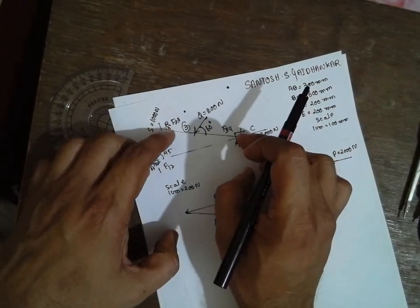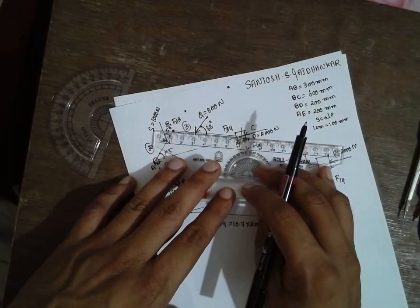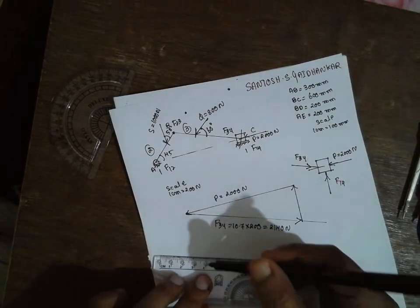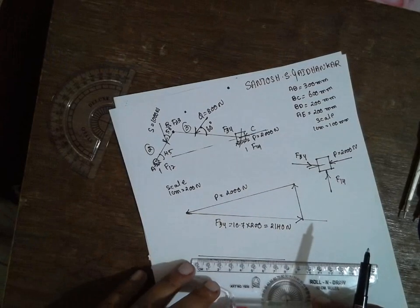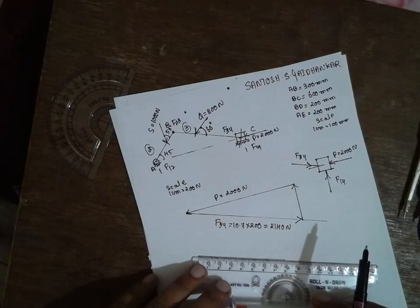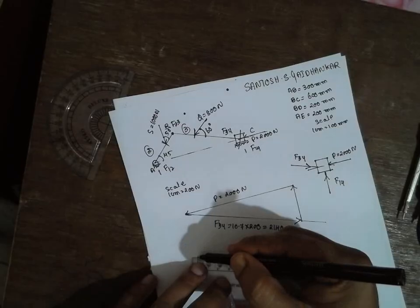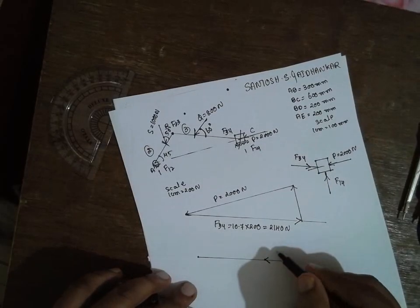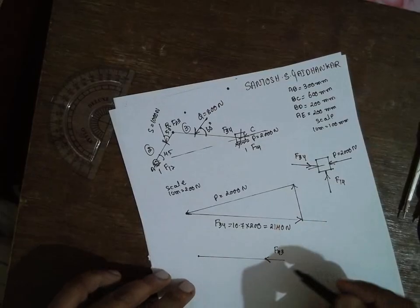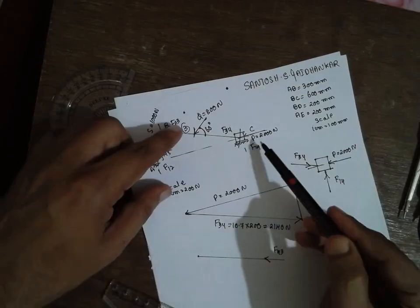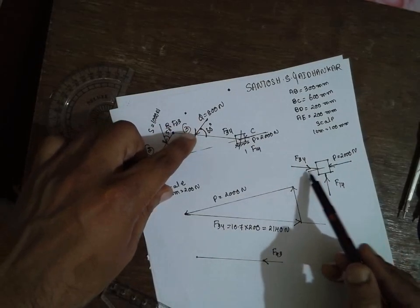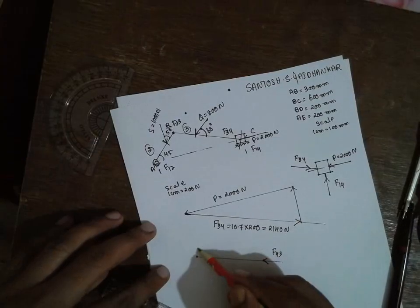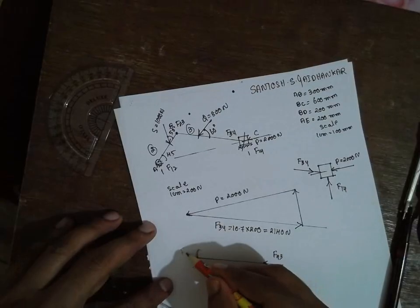Now I will go for the connecting rod. Draw a line exactly parallel to BC — a line of 6 cm. The force F43 acts in the opposite direction to F34, which is 2140 Newton. There are two known forces acting on the connecting rod at point B. We need to find F23. From B, mark 2 cm and go for 60 degrees to represent the force Q = 800 Newton.